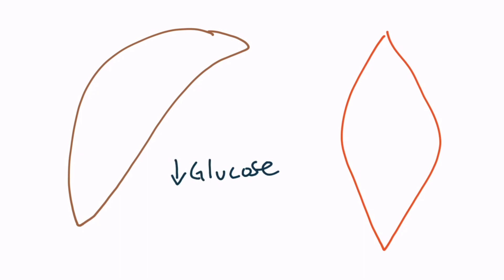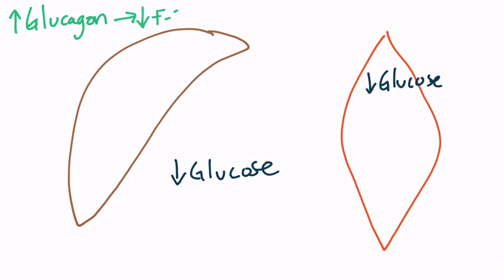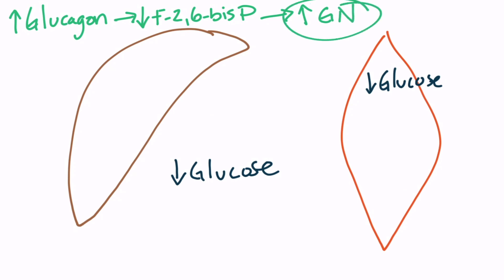Let's draw this out. Again, this will represent the liver, and this will represent skeletal muscle tissue. When blood glucose levels are low, the skeletal muscle is starved for glucose, and the liver senses this. In this scenario, insulin will be low and glucagon levels will be high. This will decrease the hepatic concentration of fructose-2,6-bisphosphate, which will halt hepatic glycolysis and increase hepatic gluconeogenesis. This allows the liver to break down amino acids, glycerol, and other products in order to create glucose, which can then enter the blood and travel to skeletal muscle tissue in need of energy.